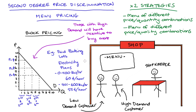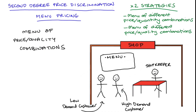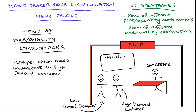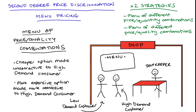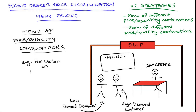The second type of second degree price discrimination as menu pricing is when the firm offers a menu that differs in terms of price-quality combinations. In this strategy, the firm will take the option targeted to the low demand consumer — the cheaper option — and make it unattractive in various ways to the high demand consumer, to prevent them from choosing it. Meanwhile, the option designed for the high demand consumer is made attractive to that high demand consumer.